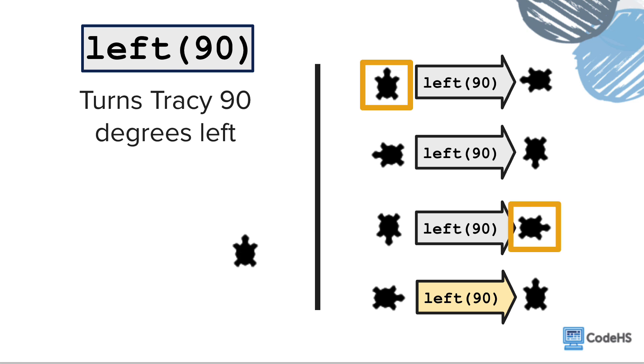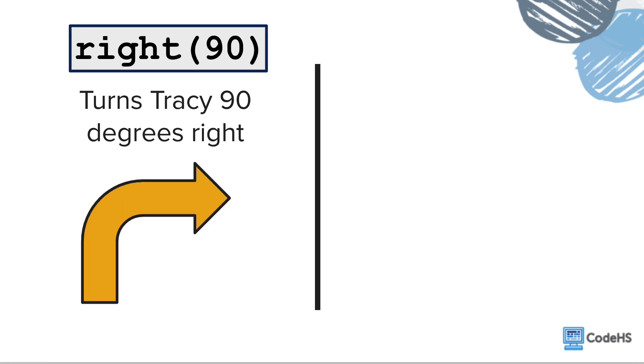Now you may be thinking, what if she's facing up, but I want her to end facing right? Do I need to call the left command three different times? Well, this will work. But just how we have the left command, we also have the right command. This command will do the same thing as the left command, but instead of having Tracy turn left, she will turn 90 degrees right when we call this command.